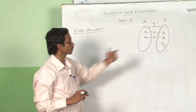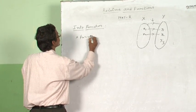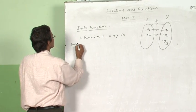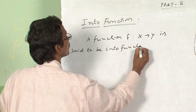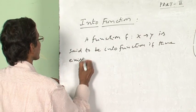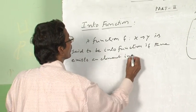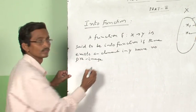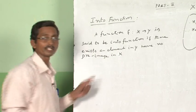A function which is not onto is also called an into function. I will write the definition. A function as a mapping from X to Y is said to be an into function if there exists an element in Y having no pre-image in X.